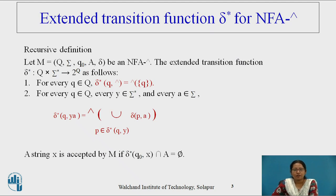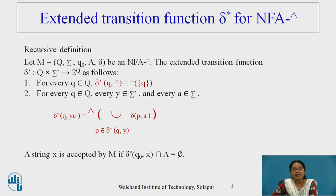In the last video session we already saw what is the null closure set of a state. That null closure set is required in the extended transition function, which is delta star. As seen in DFA or NFA, the extended transition function represents where the machine ends after processing a complete string. Same applies for NFA with null transition, but here the machine state can move from one state to another without processing anything.